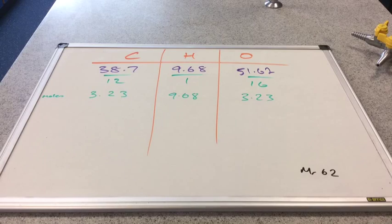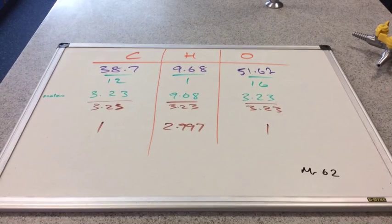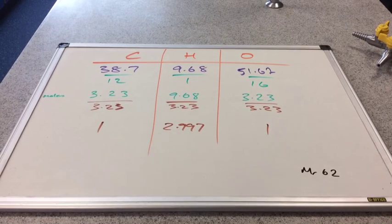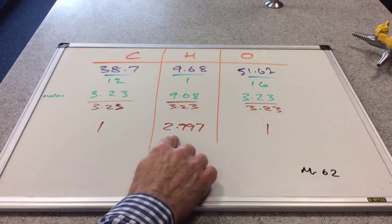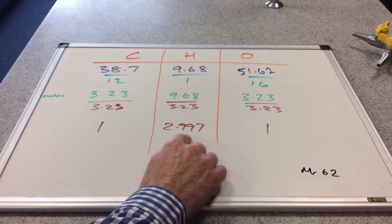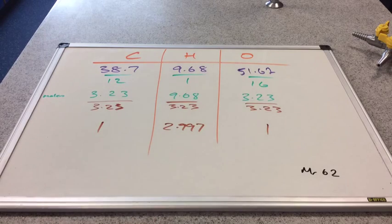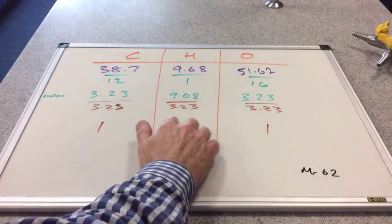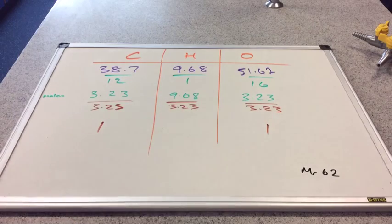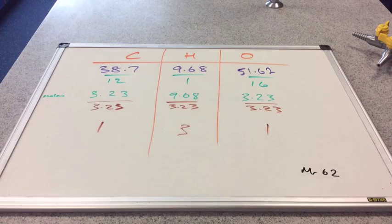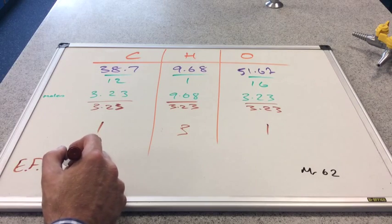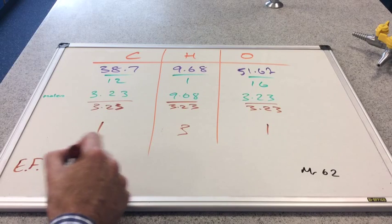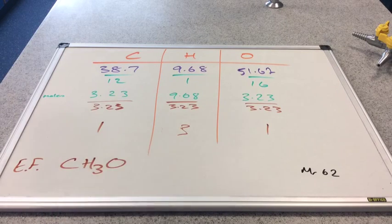And that gives us 1, 2.997, 1. And remember when you get numbers this close to the next number, we obviously can say that that's 3. So we can see now that our ratio is obviously 1 to 3 to 1. So the empirical formula must be CH3O.